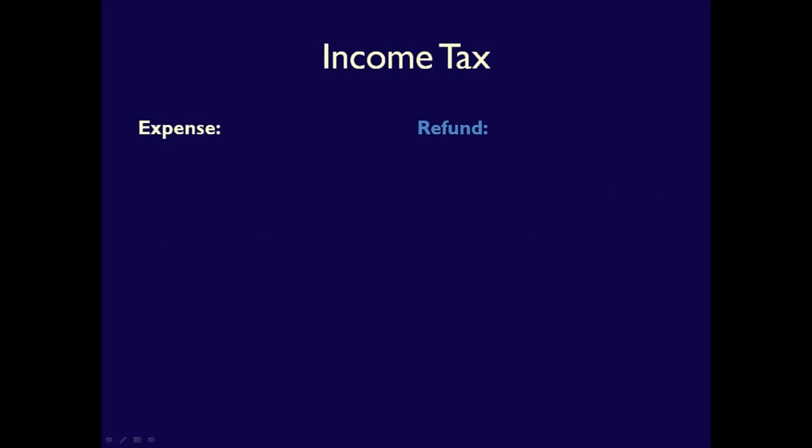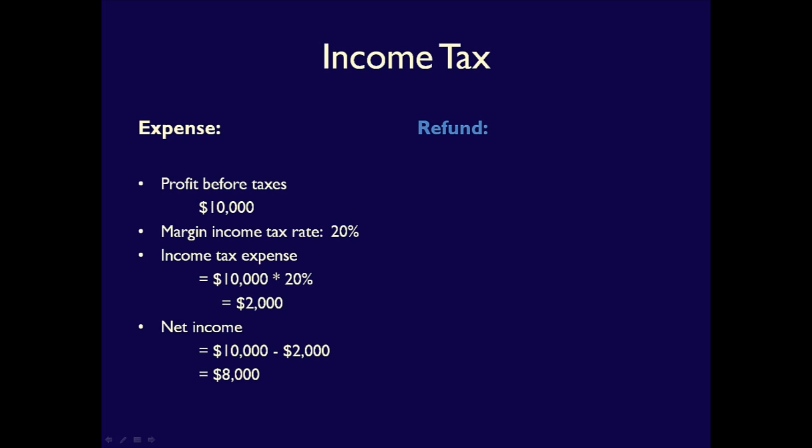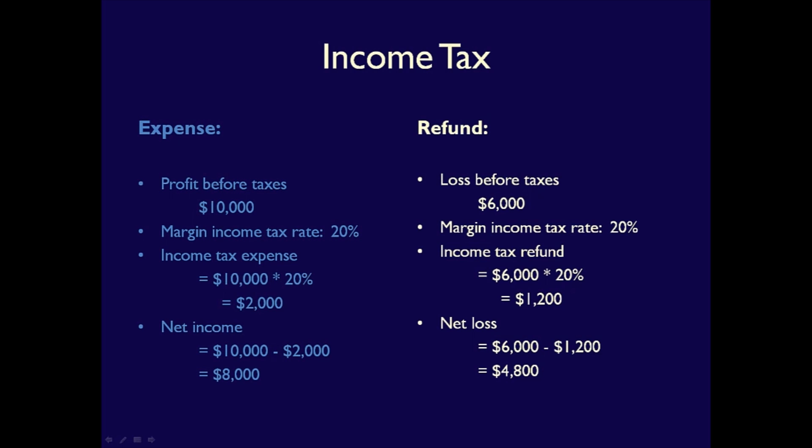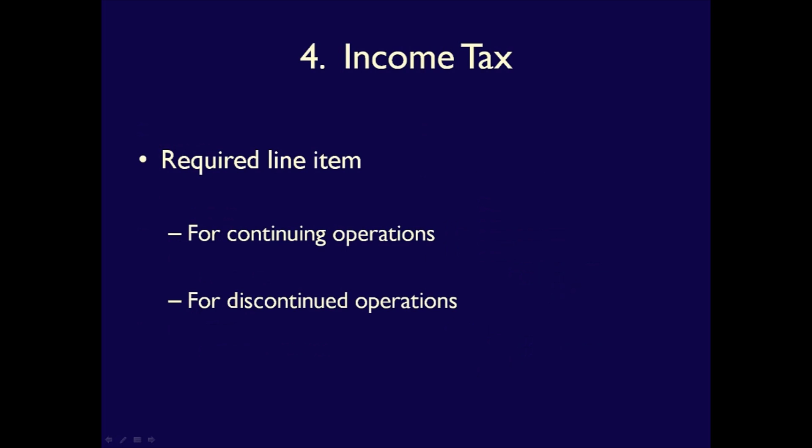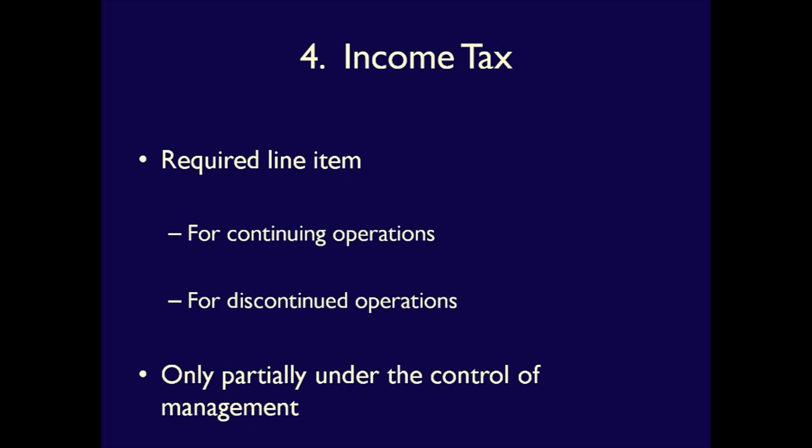Let's do an example to clarify. If there is income before taxes of $10,000, then there is income tax expense of $2,000 at a 20% marginal tax rate, making profit $8,000. But if there were losses before income tax of $6,000, the company would get a tax refund of $1,200, reducing the loss to only $4,800 after taxes. Income taxes must be disclosed for both continuing operations and discontinued operations, because it is only partially under the control of management and therefore important for stakeholders to assess the profitability of the business.